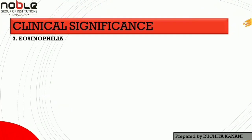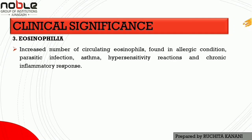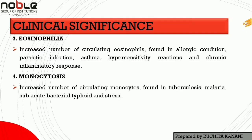The third clinical significance is eosinophilia. An increased number of circulating eosinophils is found in allergic conditions, parasitic infections, asthma, hypersensitivity reactions, and chronic inflammatory responses. The fourth is monocytosis, where an increased number of circulating monocytes is found in tuberculosis, malaria, subacute bacterial infection, typhoid, and stress.